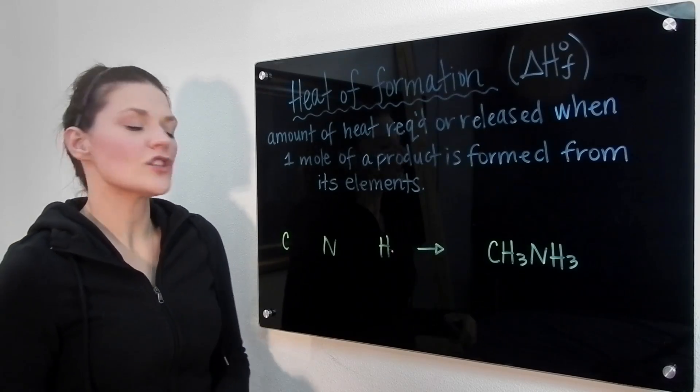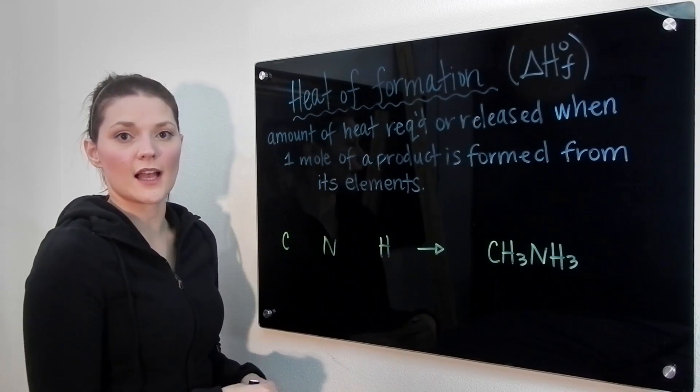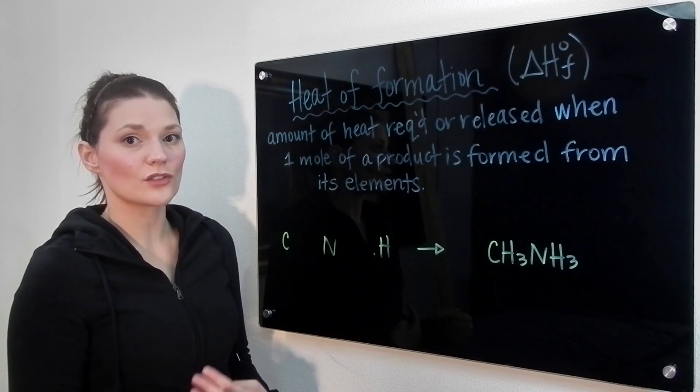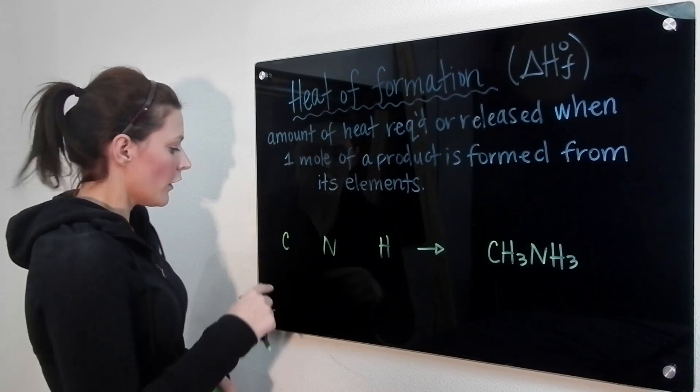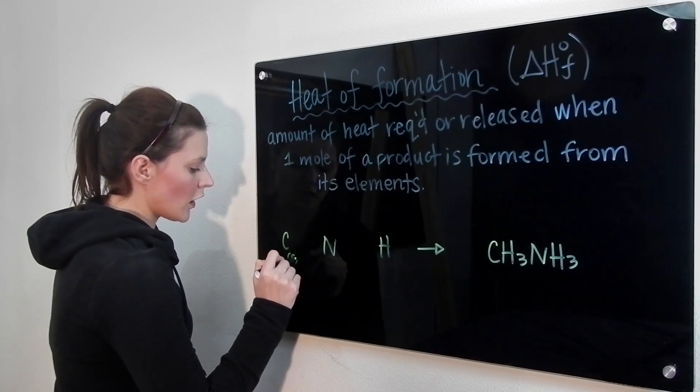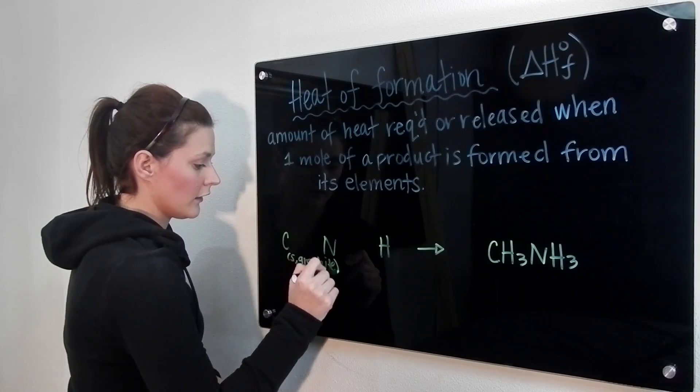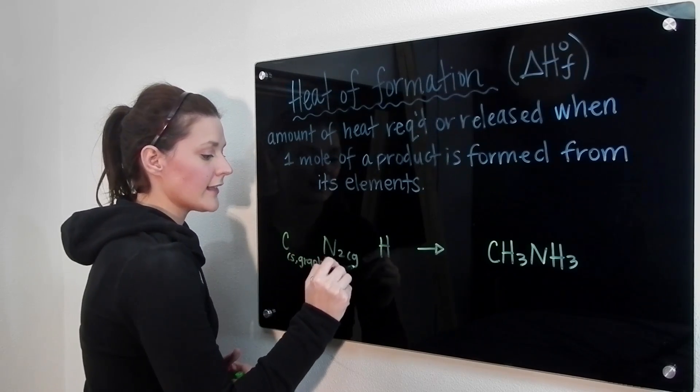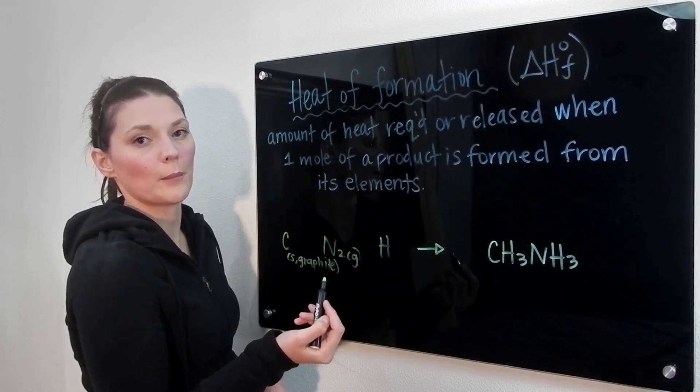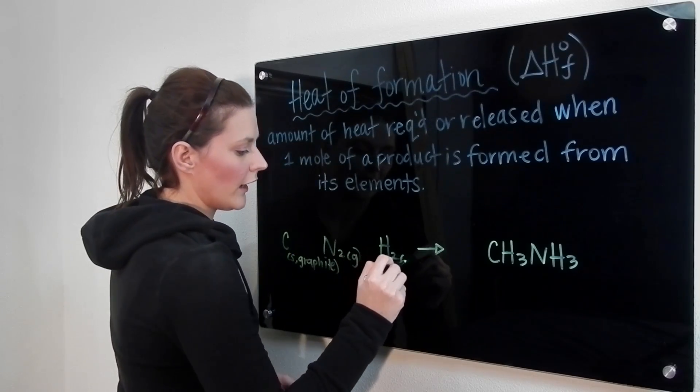The next thing is you need to make sure that these elements on the left-hand side are found in their standard state at room temperature. For carbon, that is a solid in the form specifically of graphite. For nitrogen, that has to be N2 gas as it is a diatomic molecule, and the same for hydrogen.